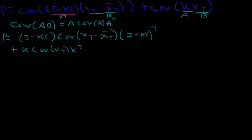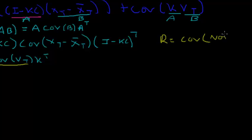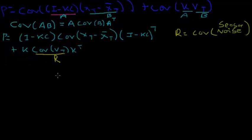This may look like we've complicated things, but there are substitutions we can make. First, the covariance of v_t — if you look at the Kalman filter algorithm, there's a matrix R defined to be the covariance matrix of the sensor noise. Since v_t is defined as the sensor noise, the covariance of v_t is just R.